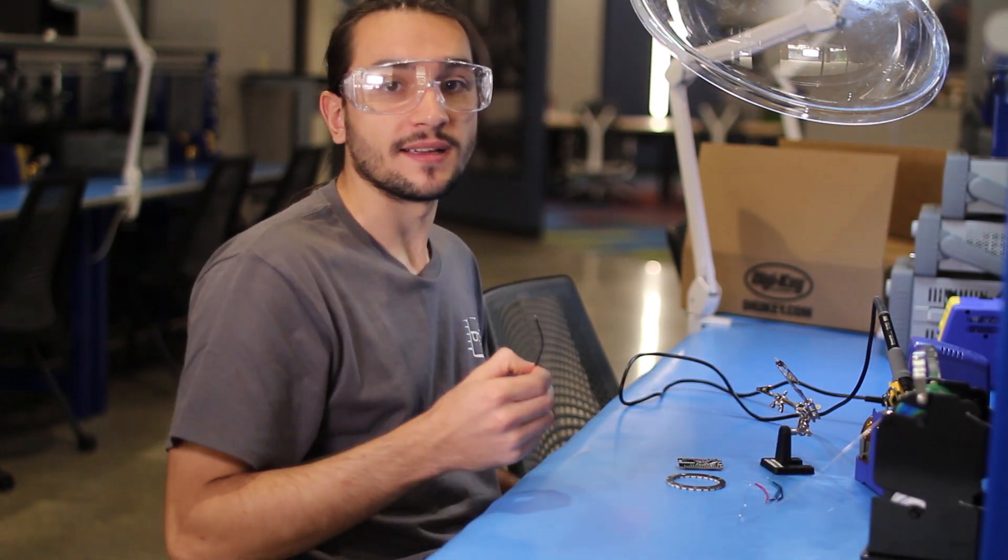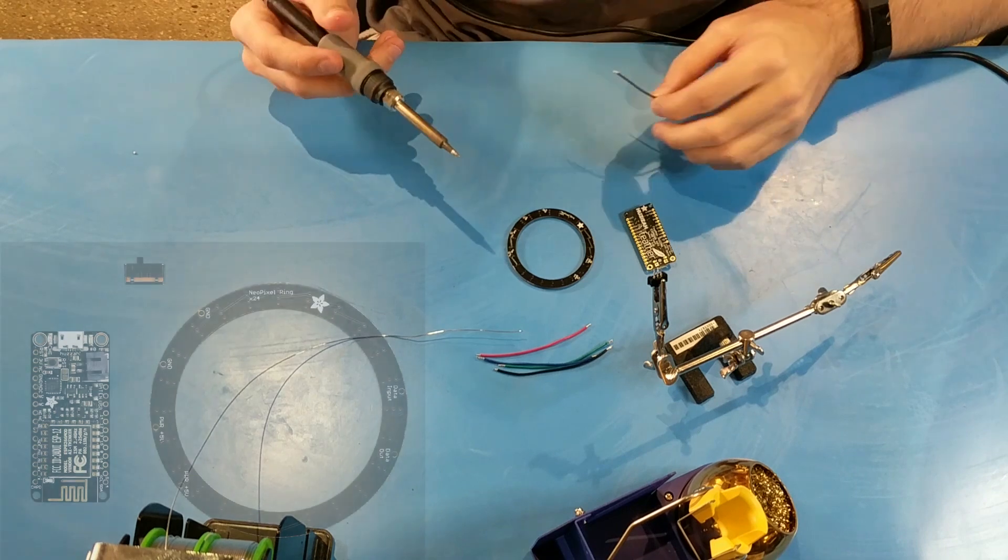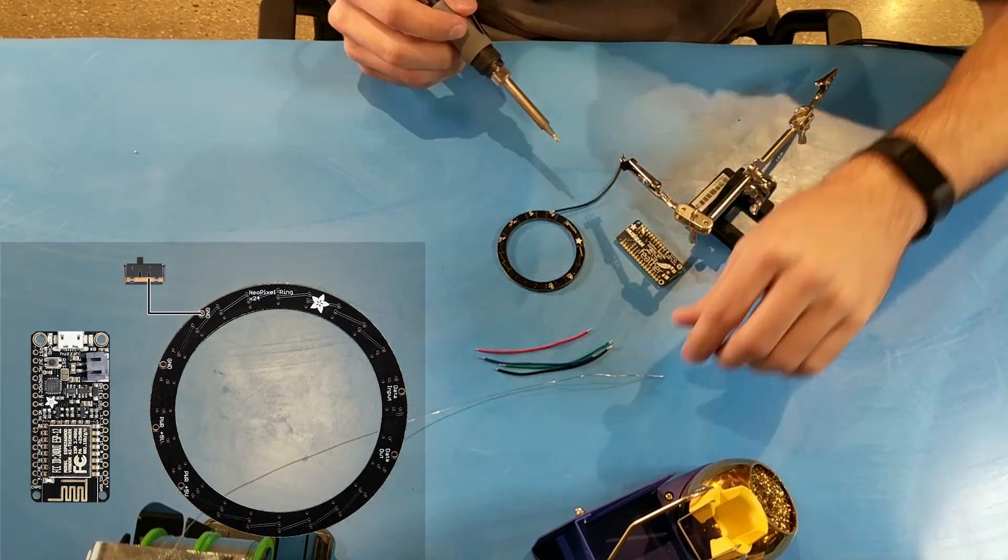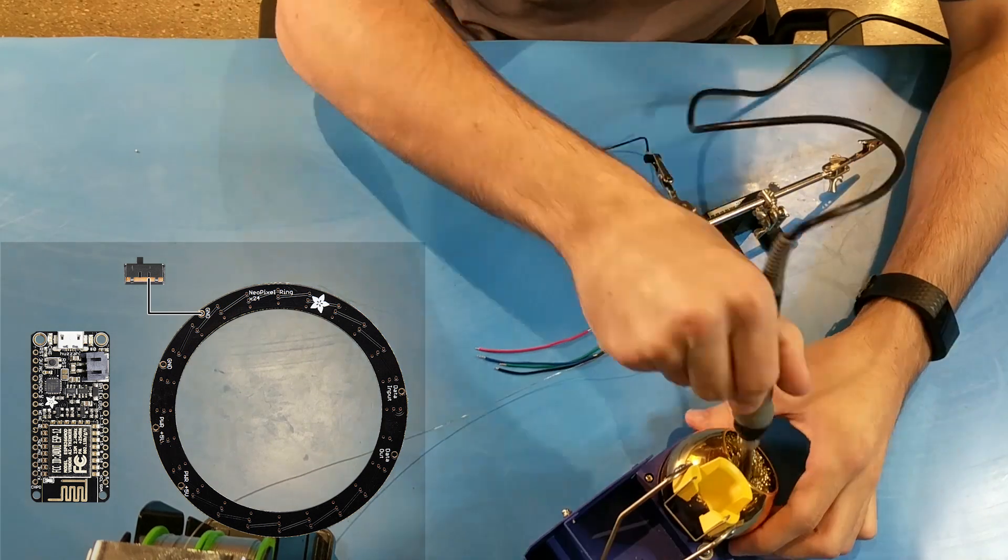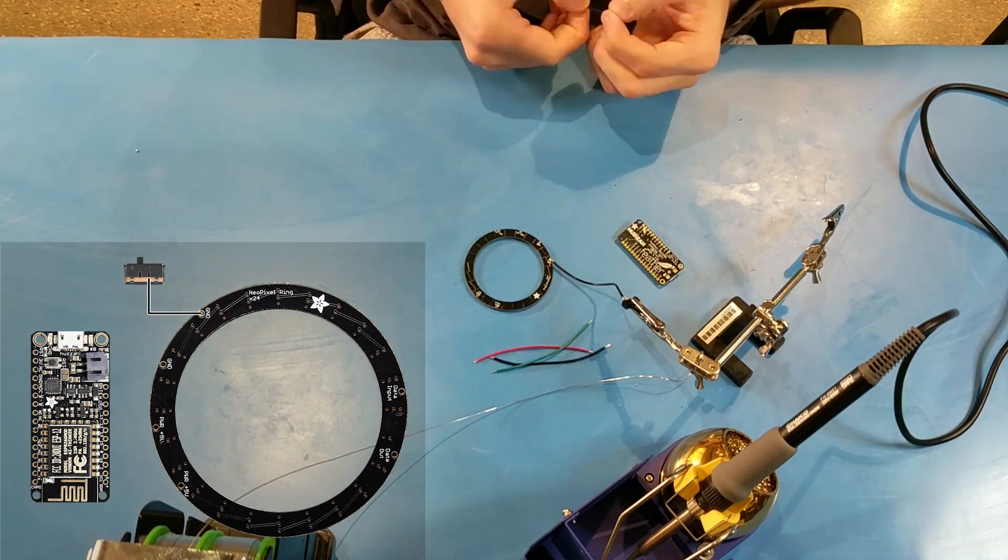For the ground, we will use black. First off, we will take the ground and solder it to the Neopixel ring, which with the other end will go to the switch. Now that we have the ground wire soldered to the switch and the Neopixel ring, we will solder the enable wire.